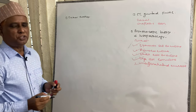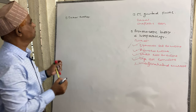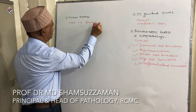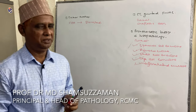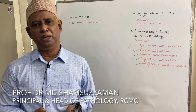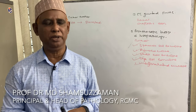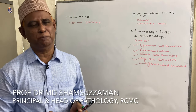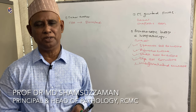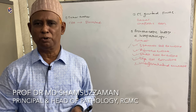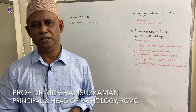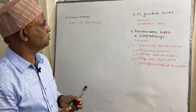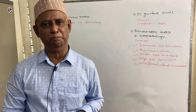Tumor marker: if we estimate carcinoembryonic antigen (CEA), it will be elevated in bronchogenic carcinoma. So, laboratory diagnosis of bronchogenic carcinoma includes X-ray chest, sputum cytopathology, bronchial brushings or washings cytopathology, CT-guided fine needle aspiration, bronchoscopic biopsy and histopathology, and tumor marker carcinoembryonic antigen. This is all about the laboratory diagnosis of bronchogenic carcinoma.